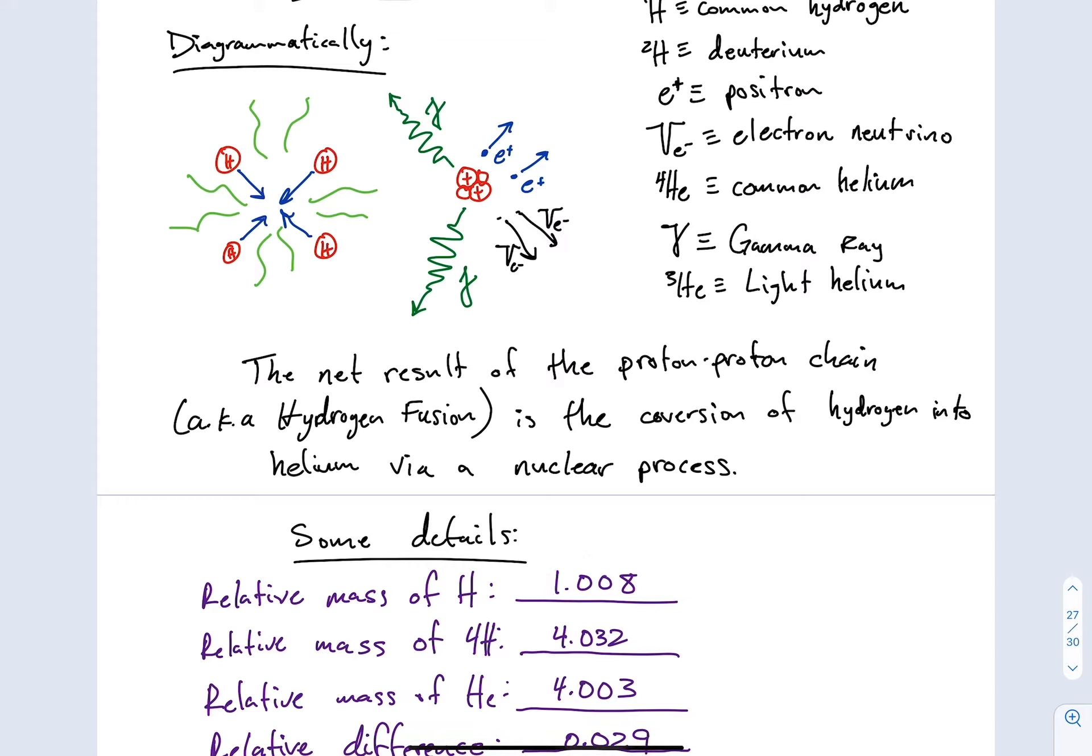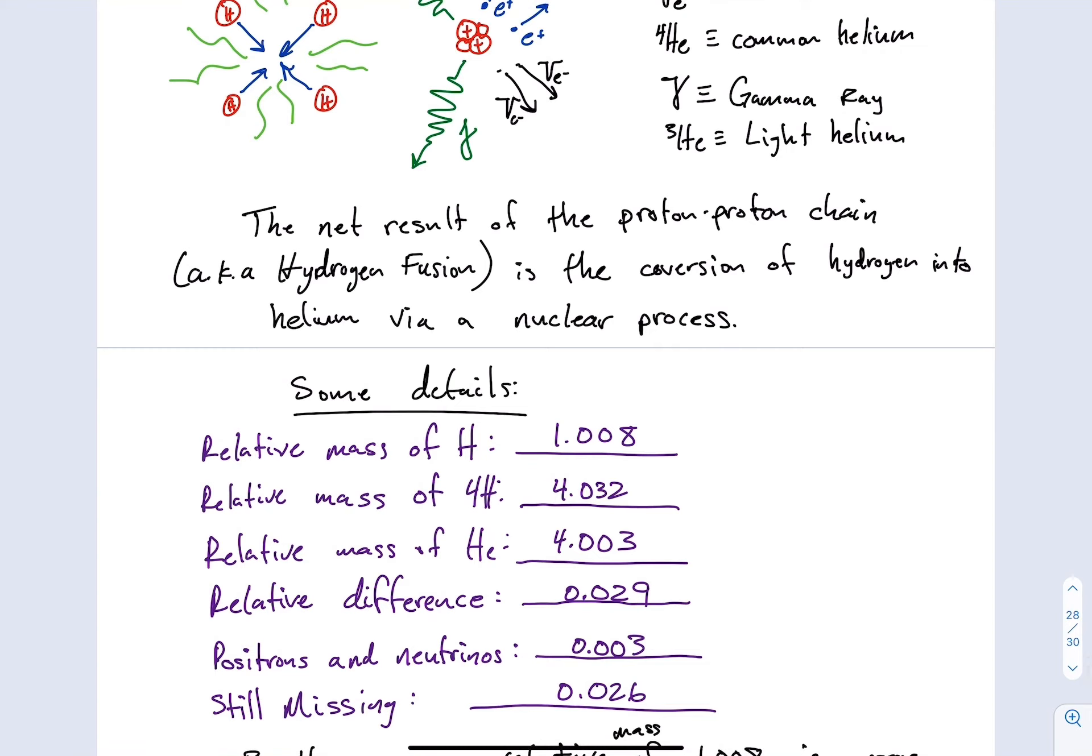Keeping in mind that the byproduct of this reaction is helium, we could look at back at the periodic table to see that the relative mass of helium is 4.003 atomic mass units, and that means we're missing some mass between this interaction and the byproduct, which is helium. If you take the difference in these two numbers you get 0.029 and I can tell you that the general mass of the positrons and neutrinos that are produced in this reaction are approximately 0.003, and so we're still missing mass. In fact, we're missing 0.026 atomic mass units worth of mass.